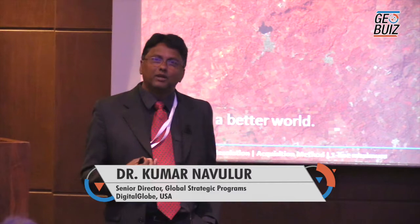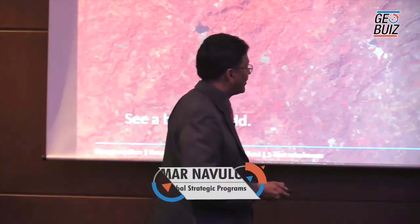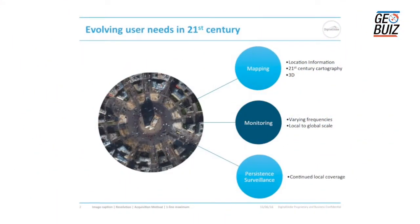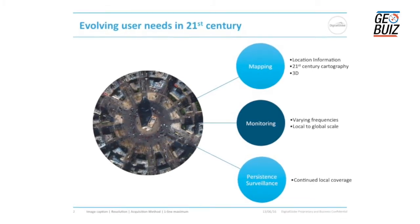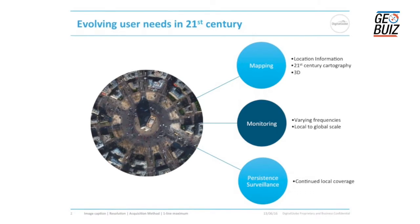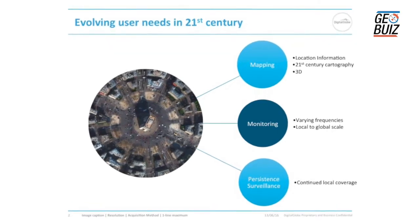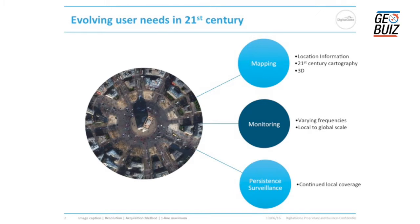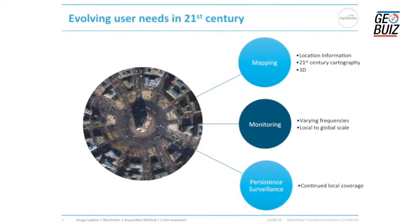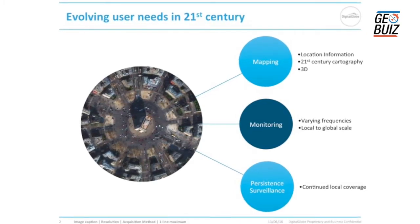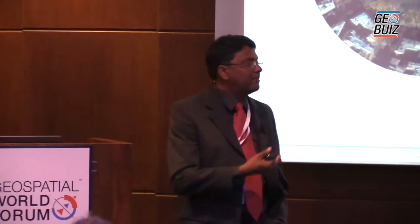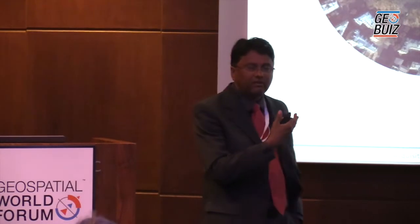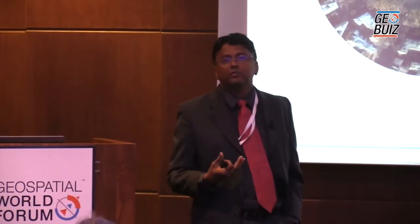The business models have been changing significantly, especially in the last few months, so that's where I'll focus my talk. When we look at users — and I love when Chris starts talking about it, it's about the users — there's a general categorization of what they do: mapping, monitoring, and persistent surveillance. Different versions of that language will be used for different verticals, but that's a high-level classification of what customers are trying to do with satellite imagery.